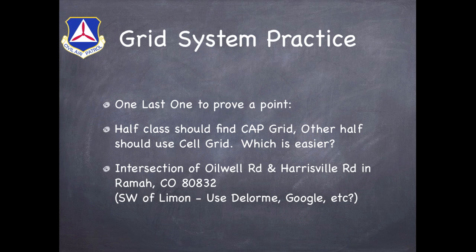Now we'll do one last example just to prove a point. If you're in a class, go ahead and split half the class using the CAP grid and the other half using the cell grid. Use whatever methods you have handy to find this location. We're looking for the intersection of Oilwell Road and Harrisonville Road in Rama, Colorado, zip code 80832 — it's actually just southwest of Le Monde. You can use a Delorme, Google Maps, whatever you have handy. See which way is easier for actually finding the required grid.